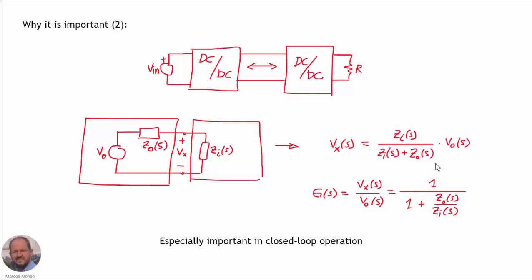We can obtain this expression and from this we can derive the transfer function of the voltage at the interface over the output voltage of the first converter. From this expression we can know if the behavior of both converters is going to be stable or not, depending on the roots of this expression. This is especially important in closed loop operation, because as we have seen in the previous video on this series, the input impedance of a DC-DC converter is negative at low frequency, which can produce instability in the operation of both converters.